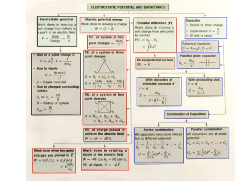Next we discuss electrostatic potential and capacitance. Electrostatic potential is the work done in moving a unit charge from infinity to a point in an electric field. V equals W divided by Q. Due to a point charge Q: V equals k times Q divided by r, where k equals 1 divided by 4 pi epsilon naught. Due to a dipole: V equals kp divided by r squared. Due to a charged conducting sphere: V inside equals k·Q divided by R (radius of sphere), and V outside equals k·Q divided by r.